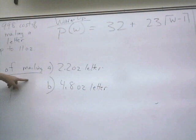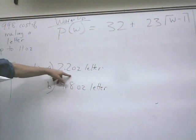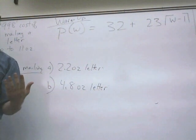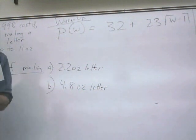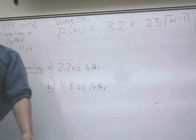So if I say the cost of mailing a 2.2-ounce letter, in your head, if you were in the post office, you would go, okay, it cost me 32 cents for the first ounce. Then I have 1.2 ounces left. When I put it on the scale, it's really going to round up to 2 ounces. So that would be 2 times 23, whatever the charge.